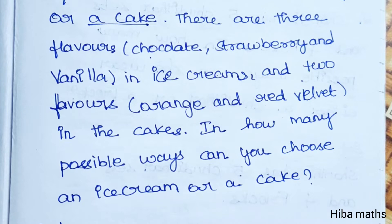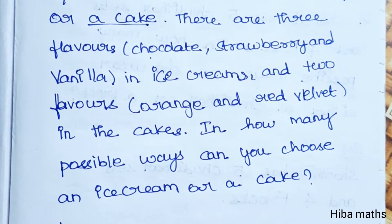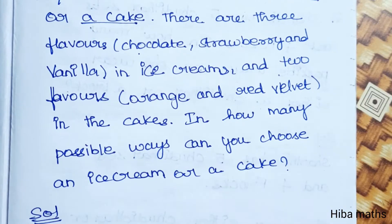You choose one item — one ice cream, not a cake, and there are no overlapping options. So we have 3 ice creams and 2 cakes, so there are 5 choices. From those 5 choices, you can select one.